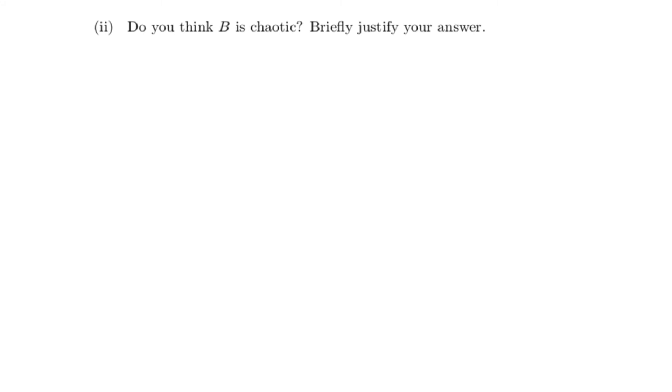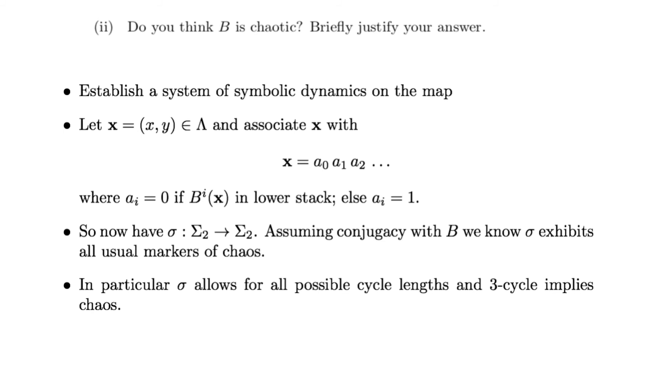Next, it asks you whether you think the Baker map is chaotic. The map is indeed chaotic, and one of the signatures you can observe is the fact that the map exhibits sensitive dependence on initial conditions through this procedure of stretching and folding, or in this case stacking. However, I'll give a more technical answer which will hopefully convince you. What you can do is establish a system of symbolic dynamics on the map. Let the bolded x be a point in the invariant set, and let's associate this point x with a symbol sequence. So here we've written x as a_0, a_1, a_2, and so forth. Now for the i-th symbol a_i, you would set it to be equal to 0 if the i-th iteration of B sends x to the lower stack, or you set it to equal 1.